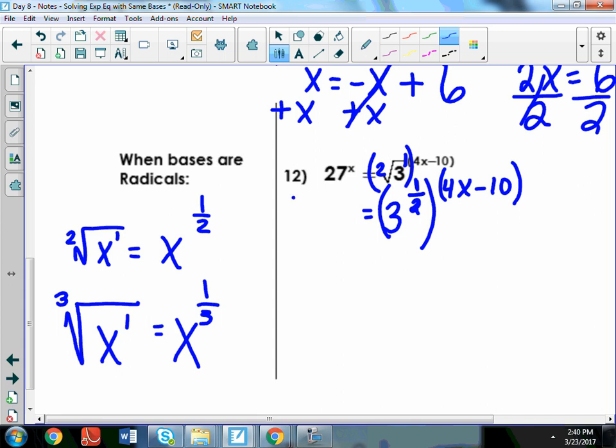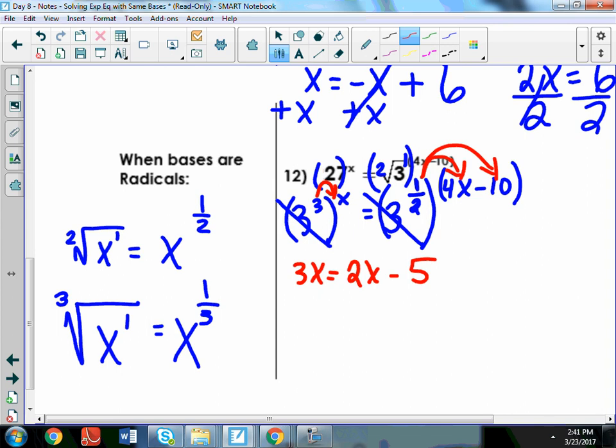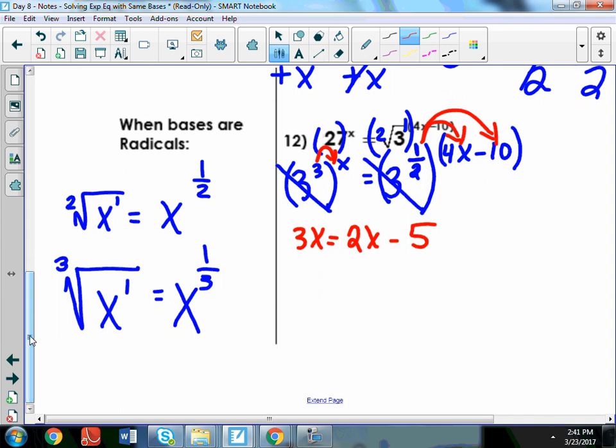How can I rewrite 27 with a base of 3? 3 to the 3rd. Good. So, 3 to the 3rd and then the x. So, now, what do you do next? Good. Multiply the exponents, cross off your same base. So, 3 times x gives you 3x equals, and over here we have 1 half times 4x equals 2x and then half of negative 10 is negative 5. So, you want to get your x's together, just subtract those x's and it leaves you with x equals negative 5.